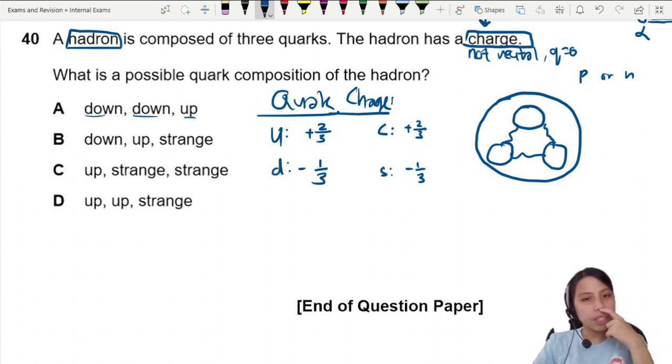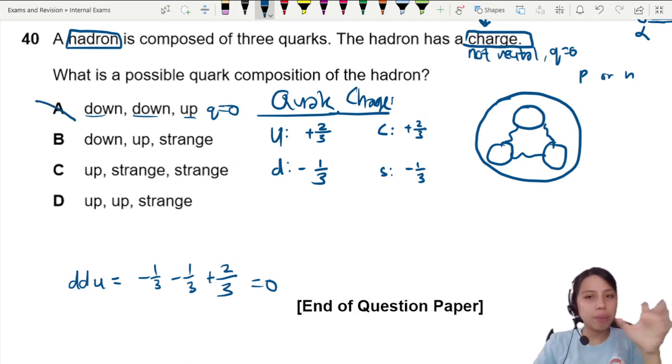Down, down, up. I'll write an example here. Down, down, up will give us q equals zero. No, we need a charge. This thing must be charged, either positive or negative.